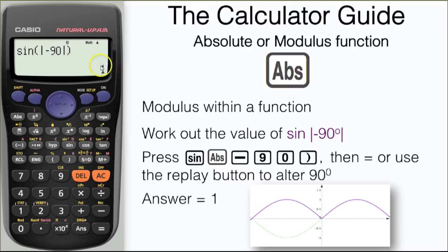If we have a look at the graph, we can see that where the value would be minus 1 for minus 90 on the regular sine curve, we now have a reflection in the y-axis. And that will give us a value of 1 when sine is 90 or minus 90.